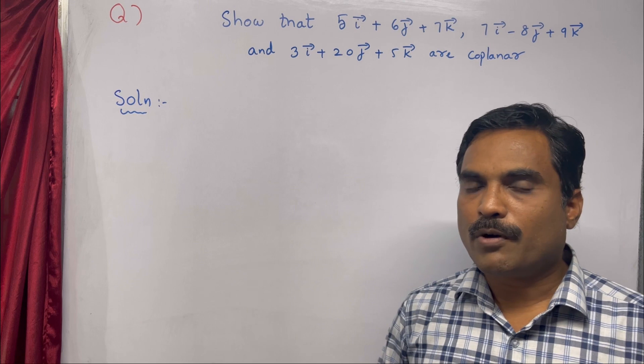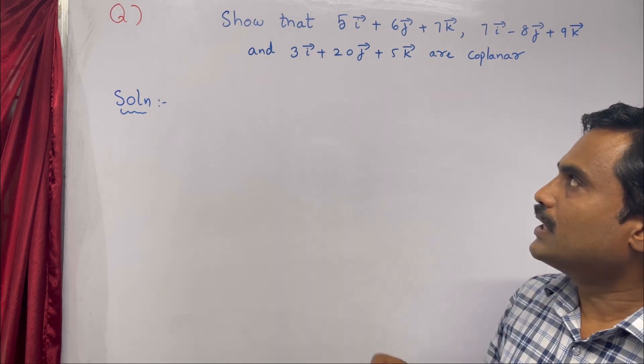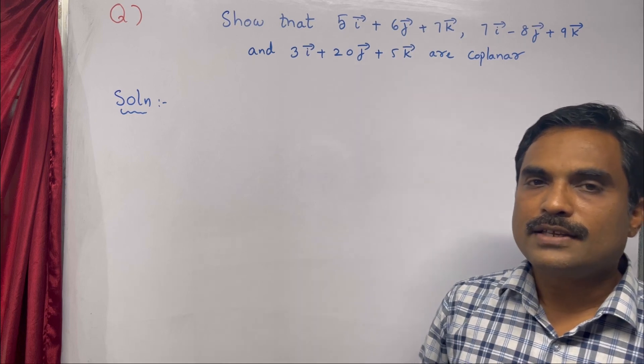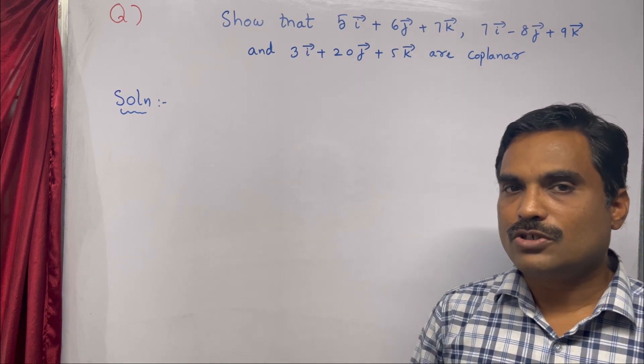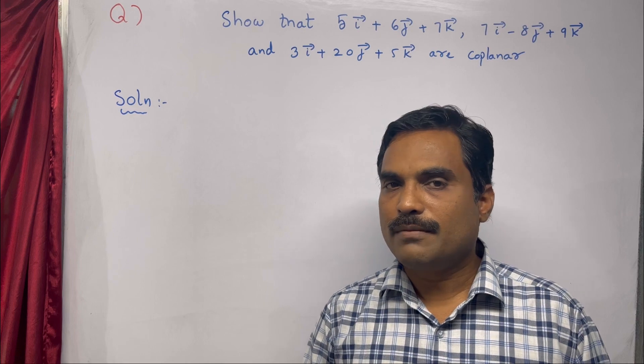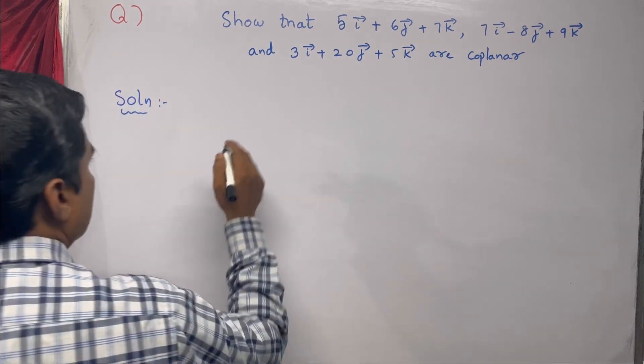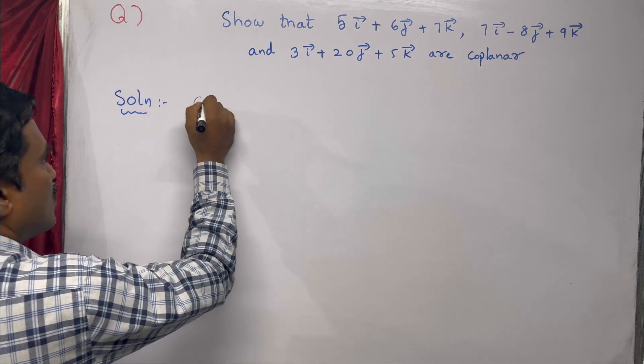To do this, you will find the scalar triple product. That means we have to take a determinant of all these coefficients of î, ĵ, and k̂. If its value is zero, then you can say that the given three vectors â, b̂, and ĉ are coplanar.